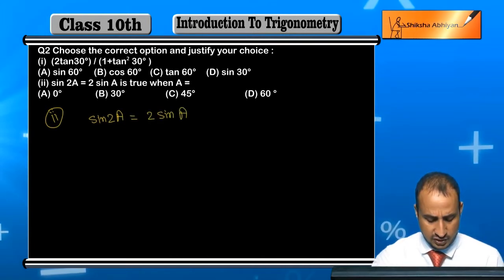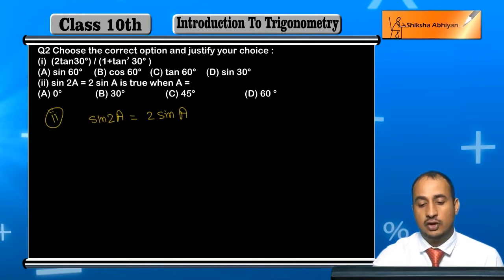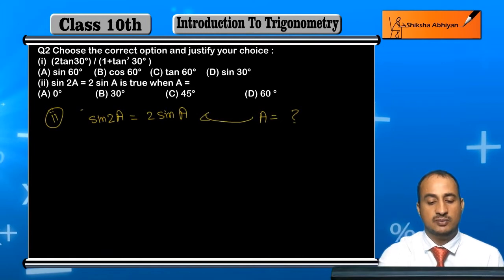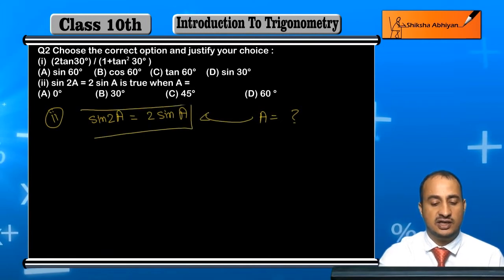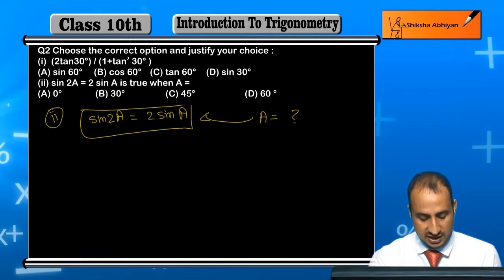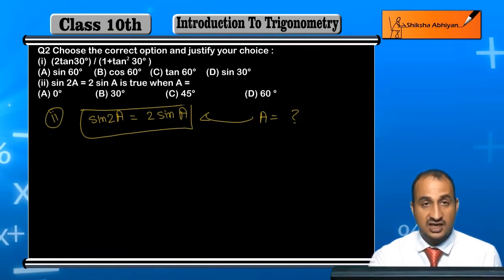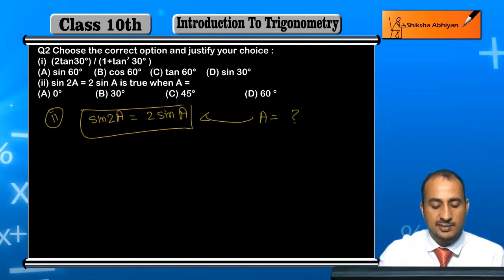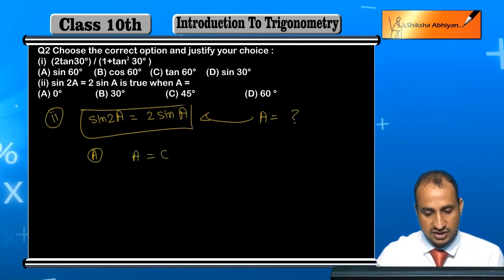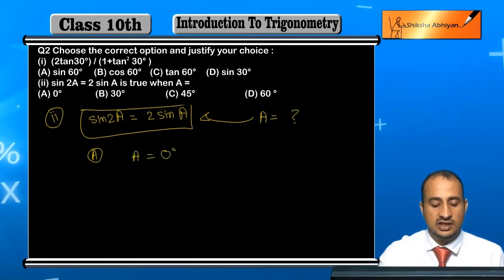sin2A = 2sinA — for which value of A will this complete statement be true? Options are given, so we will substitute each option one by one. In option A, what is given? A = 0°.